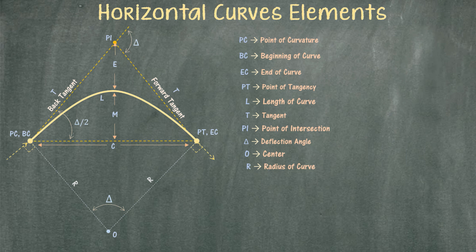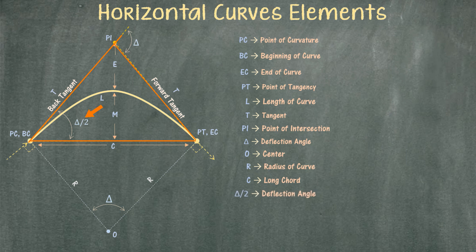The next element is called the long chord. This is the straight distance between the beginning of the curve and the end of the curve. Be mindful that sometimes they try to confuse you into thinking this is the length of the curve — but this is actually the straight line from beginning to end of the curve, not the actual length of the curve. The angle between the long chord and the back tangent, or the long chord and the forward tangent, is half of the deflection angle.